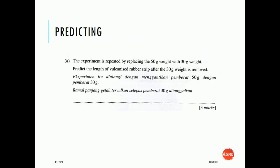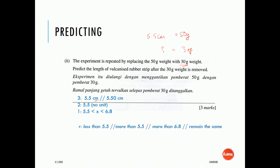The experiment is repeated by replacing the 50g weight with 30g. Predict the length of the vulcanized rubber strip after the 30g weight is removed. The answer is 5.5 cm — the unit must be stated to get score 3. Score 2: 5.5 without unit. Score 1: a value between 5.5 and 6.8. The student cannot give an answer less than 5.5 or more than 6.8.